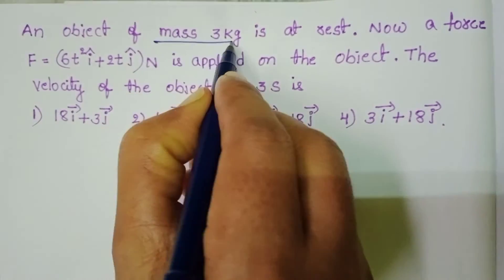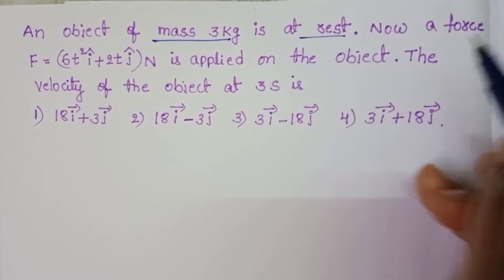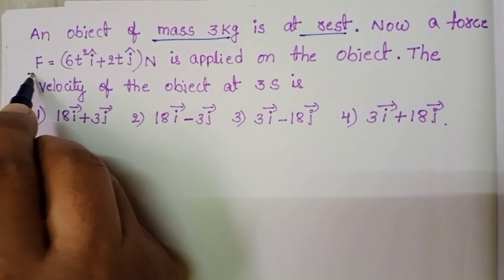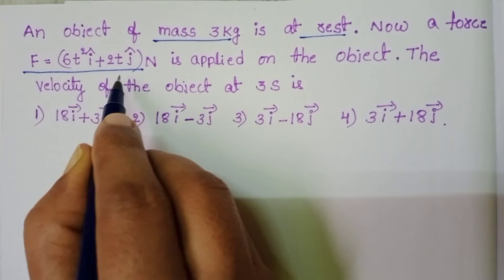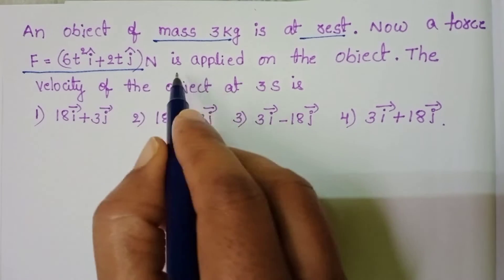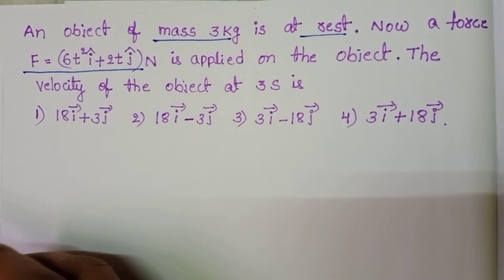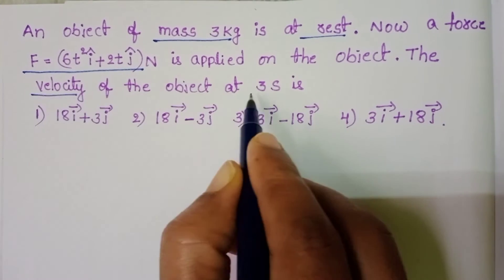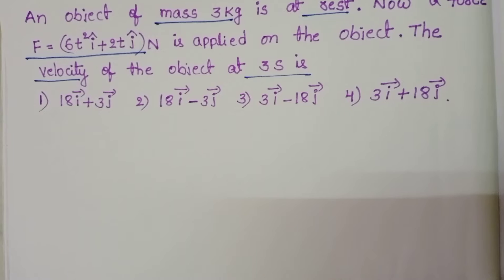An object of mass 3 kg is at rest. Now, if force F equals 6T² î + 2T ĵ Newton is applied on the object, the velocity of the object at 3 seconds is: